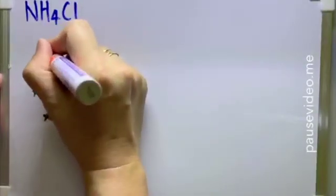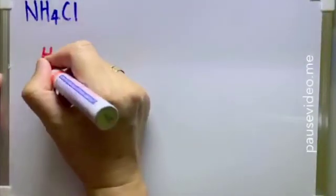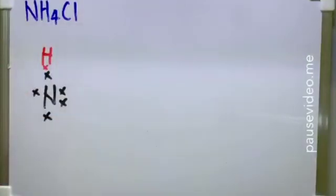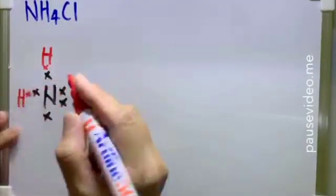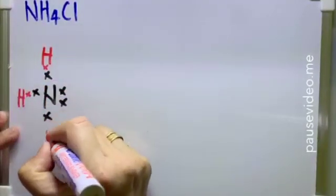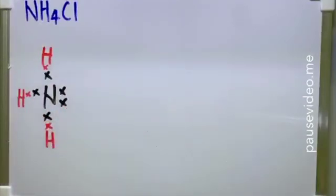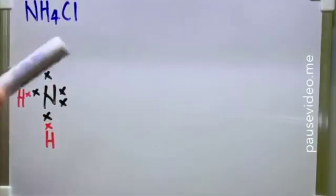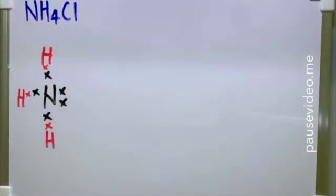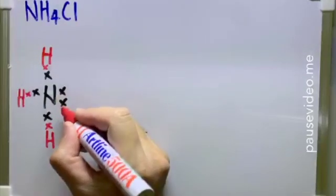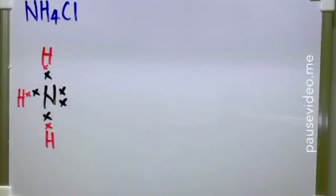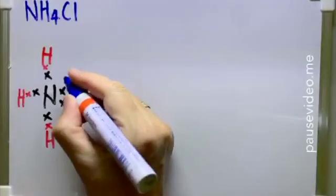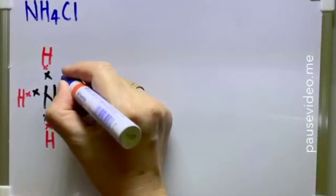Hydrogen — each of them will have one valence electron. When they form a single covalent bond with nitrogen, this is what the Lewis structure of ammonia looks like. From this Lewis structure, we can see that there is one lone pair. This is the lone pair.